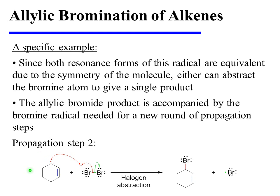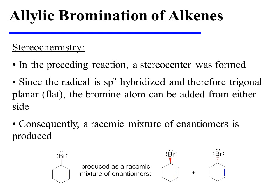Since the two resonance forms of the allylic radical are completely equivalent due to molecular symmetry, either one can be used in propagation step 2 to afford the same product. The allylic radical abstracts a bromine atom from Br2, forming the allylic bromide product and regenerating the bromine radical needed for propagation step 1. A stereocenter was formed during this reaction — since the radical is sp2 hybridized and has trigonal planar geometry, the bromine atom can be added from either side, so the product is produced as a racemic mixture of enantiomers.